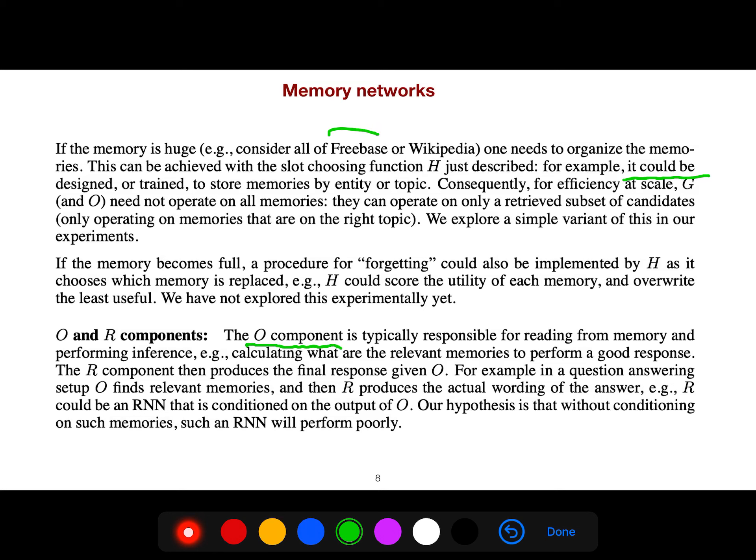The output component is typically responsible for reading from memory and performing inference, calculating what are the relevant memories. Because we have for example 100 memories, the output says just number 3 and number 75, these are the memories that are relevant to the query. So we combine this information and it gives you the response. From 1000 memories that we have, we select just two or three memories, for example memory number 4, memory number 7, 56, memory number 78. We say this question is relevant to just these memories, these sentences, and by combining them we can get our response.